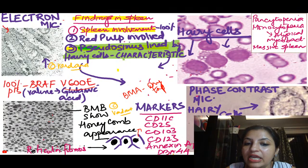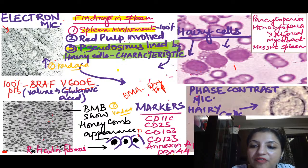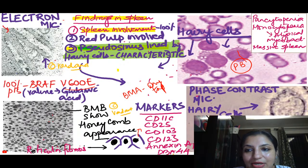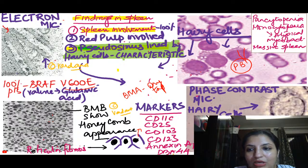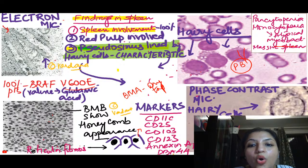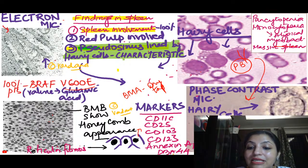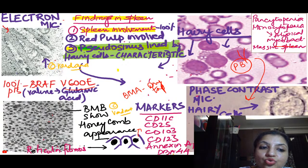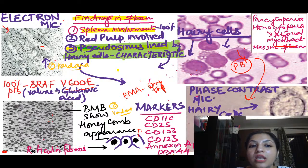In peripheral blood findings, the case typically presents with pancytopenia and also monocytopenia. Monocytopenia is very characteristic in hairy cell leukemia, because of which patients typically have atypical mycobacteria infections. So an elderly patient presenting with atypical mycobacteria infections and pancytopenia — always look for hairy cell leukemia. To confirm hairy cells, you can use phase contrast microscopy where hairy cells are well seen, or electron microscopy which shows ribosome-lamellar complexes.